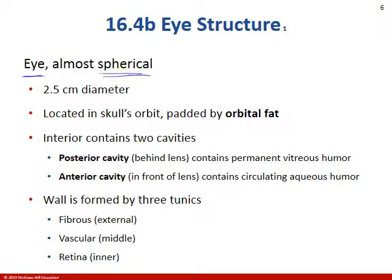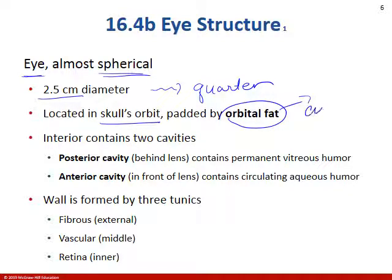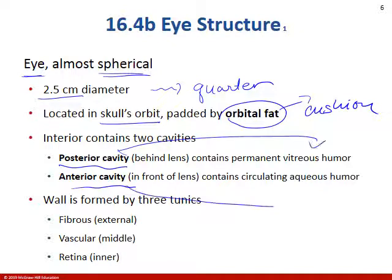Your eye is mostly spherical, about 2.5 centimeters — about the size of a quarter. It's located in the skull's orbit. There's going to be some fat cushion behind the eye, and we're going to have two cavities: the posterior cavity and the anterior cavity, both filled with fluid. Aqueous humor is in the anterior and vitreous humor in the posterior.